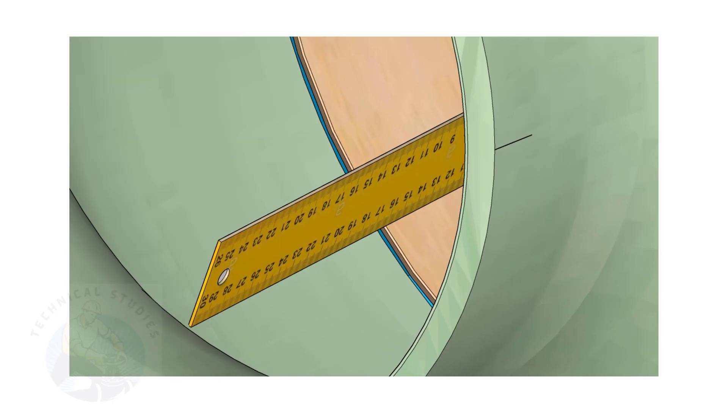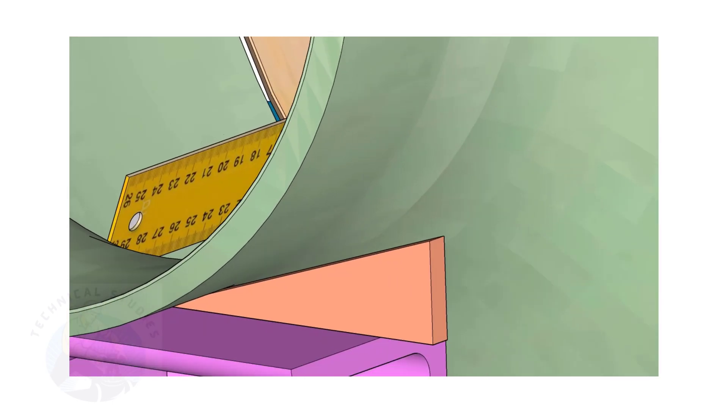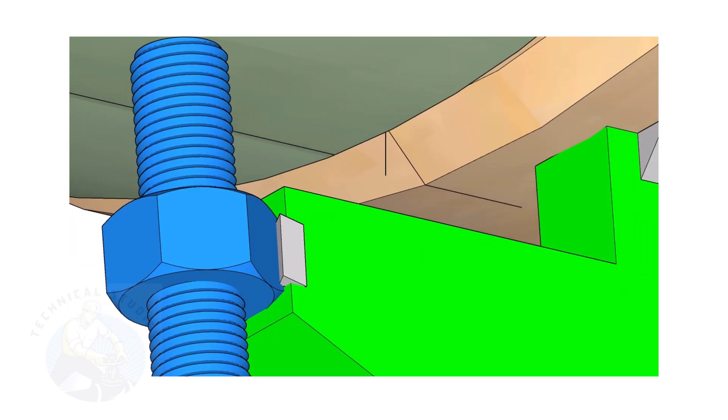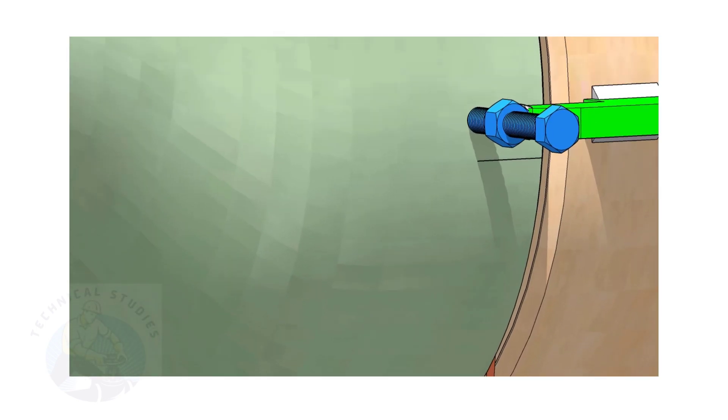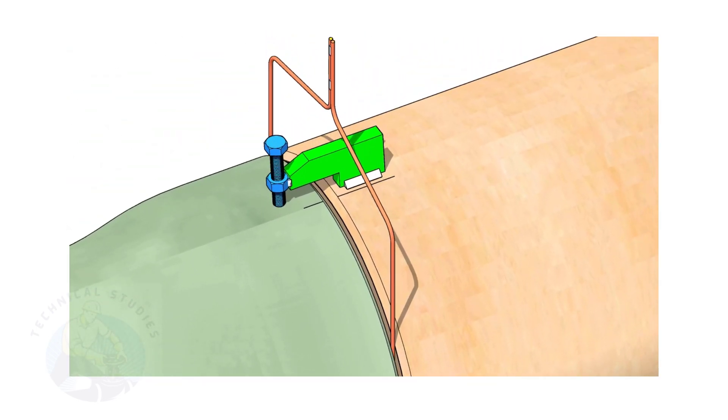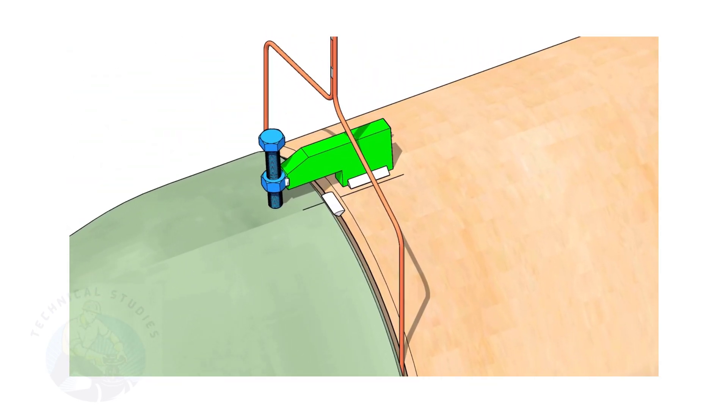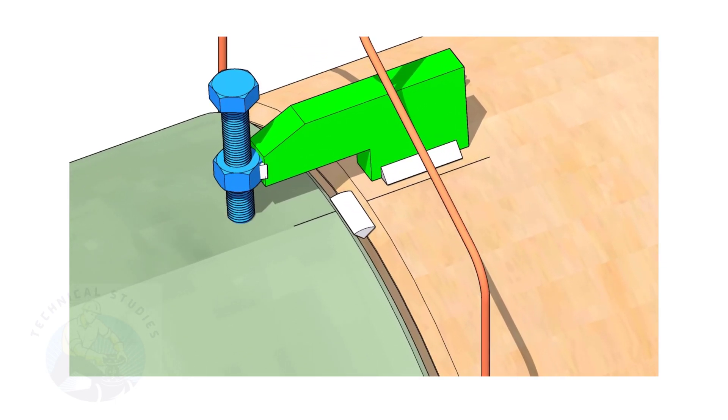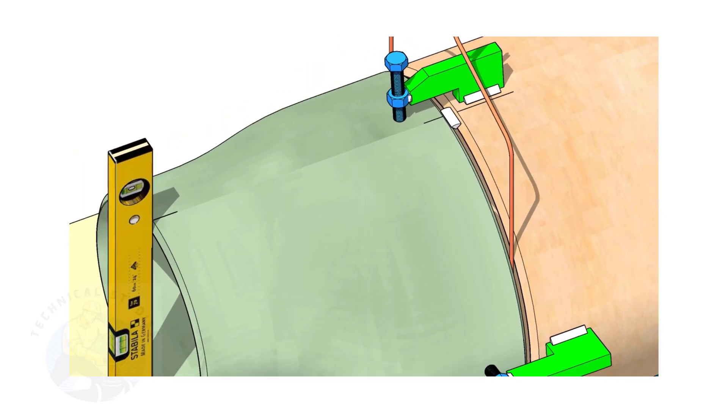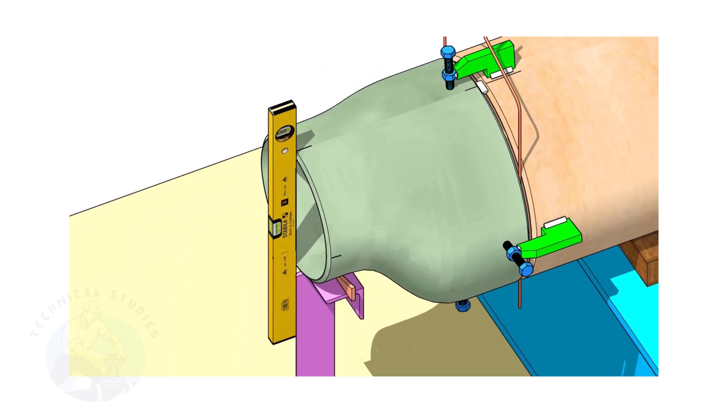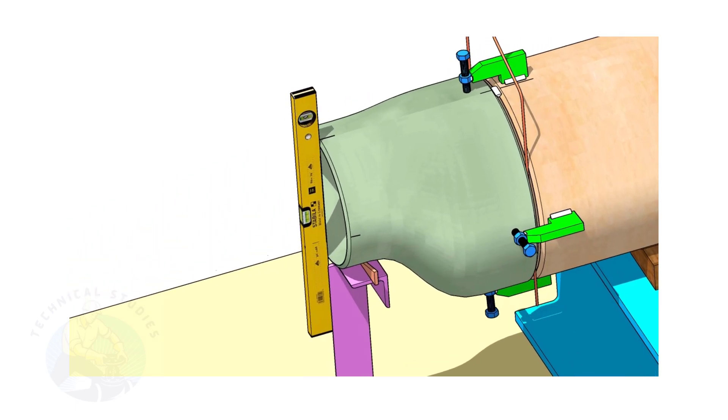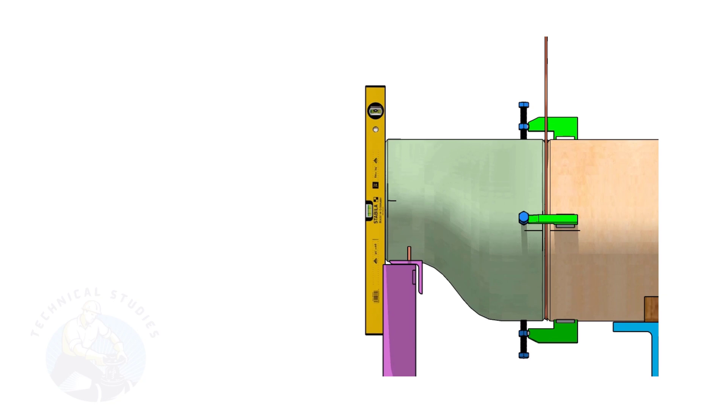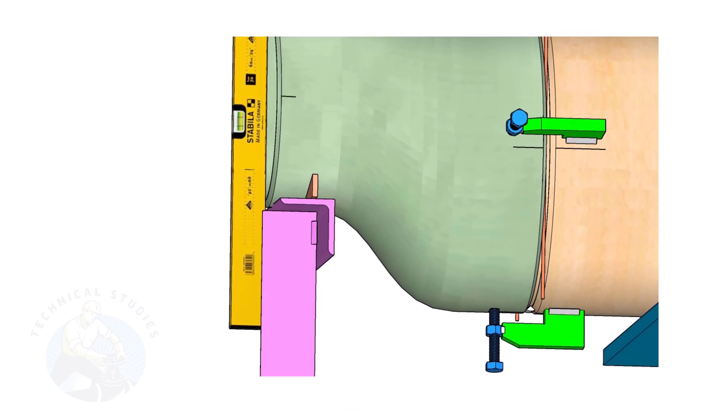By adjusting the jack bolts, correct the overlap of the joint inside the pipe. Now, tack weld on the top side of the joint.